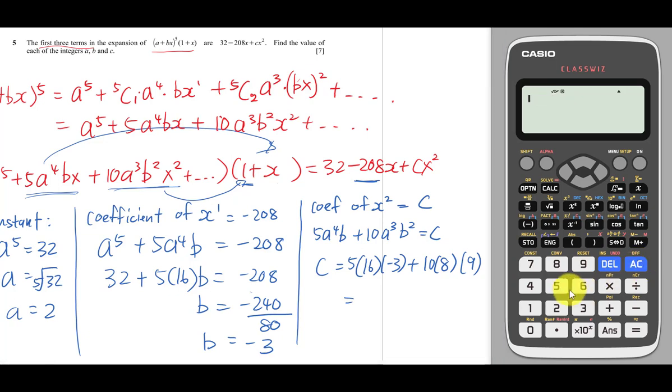Then plus 10 times 8 times 9, which is 80 times 9. The final answer should be 480 for c.